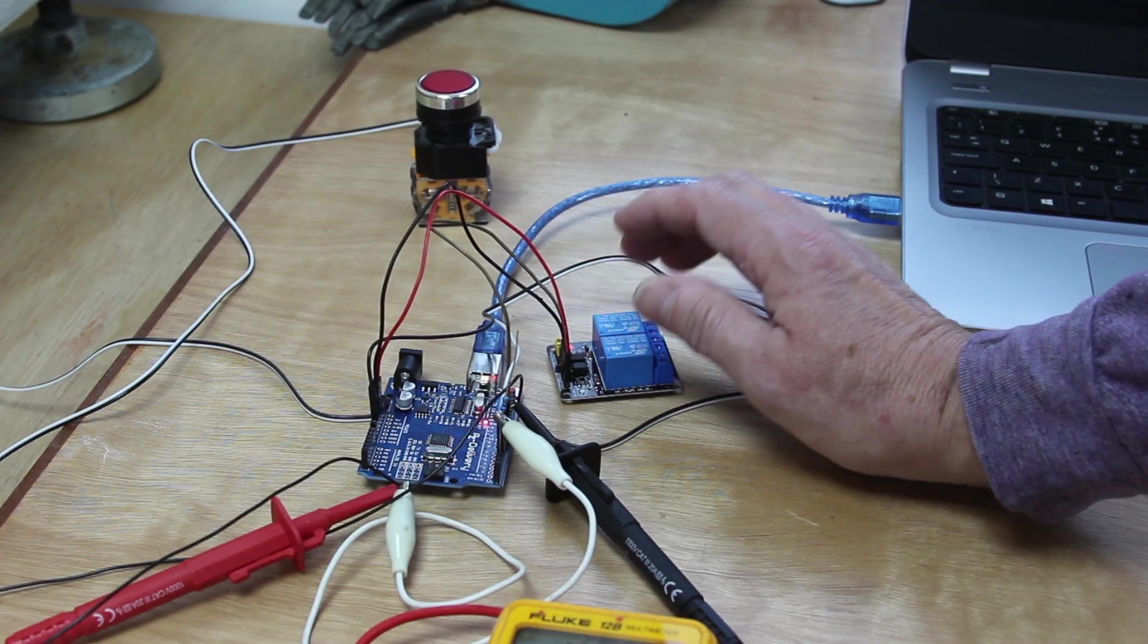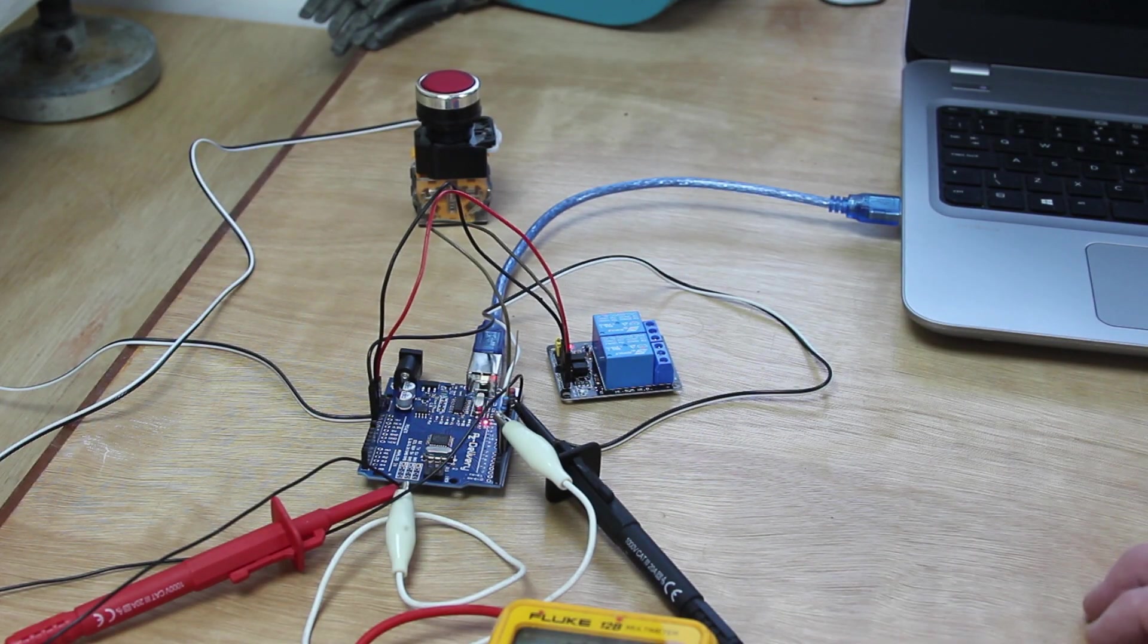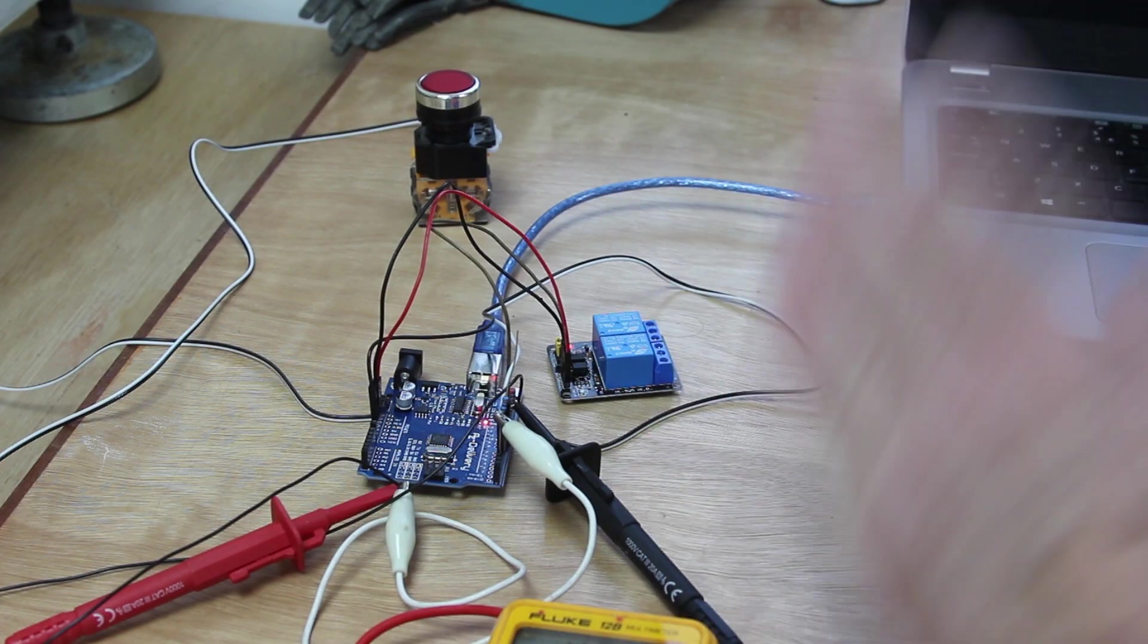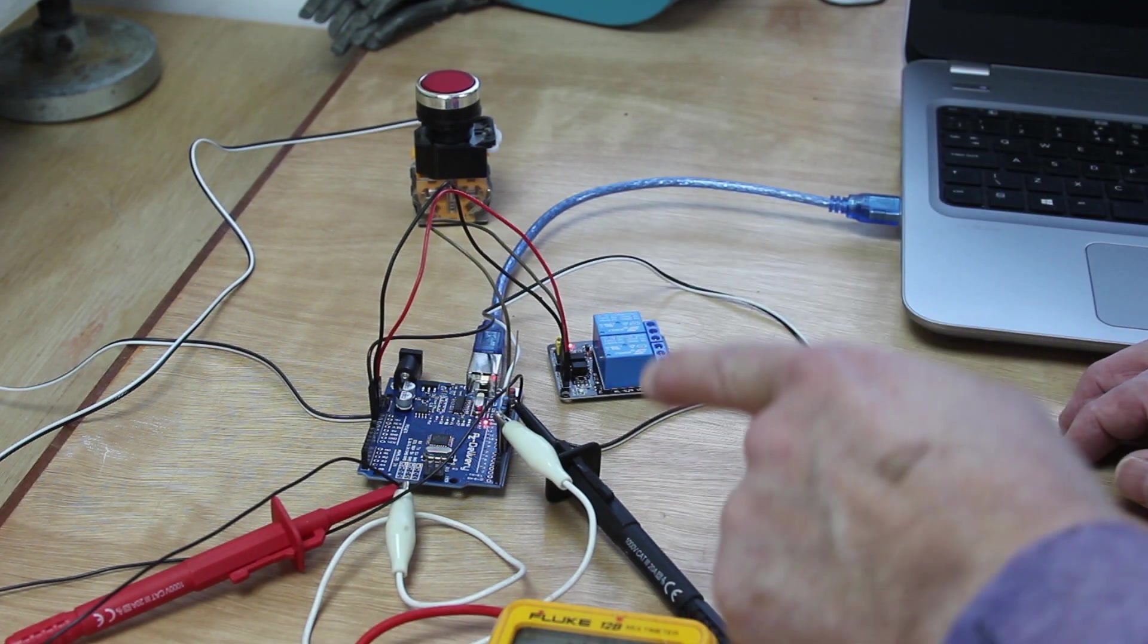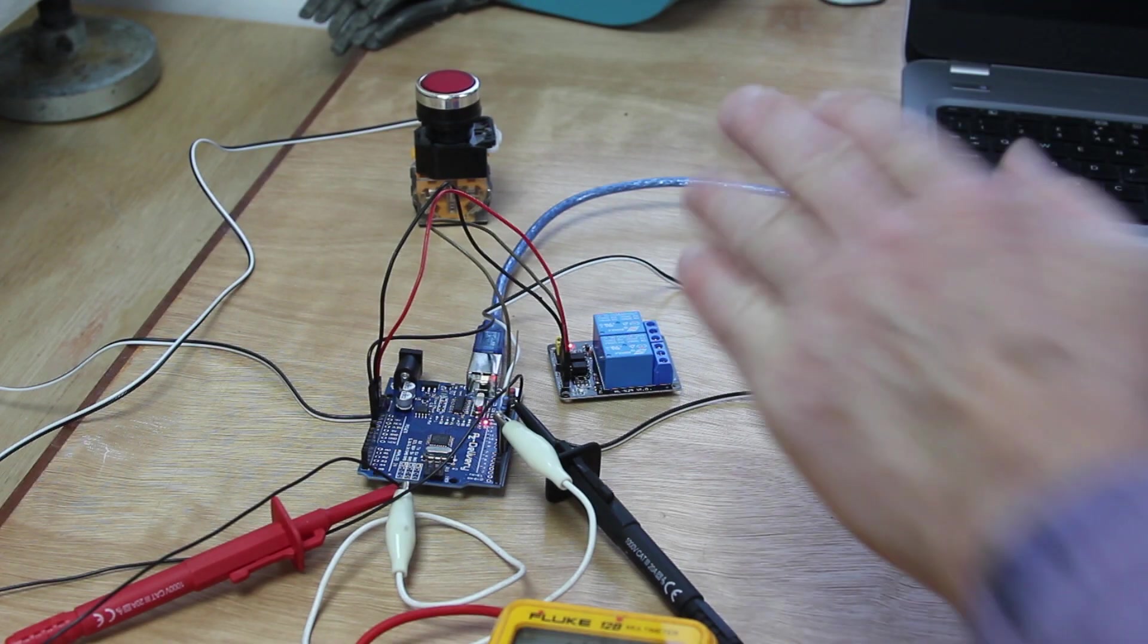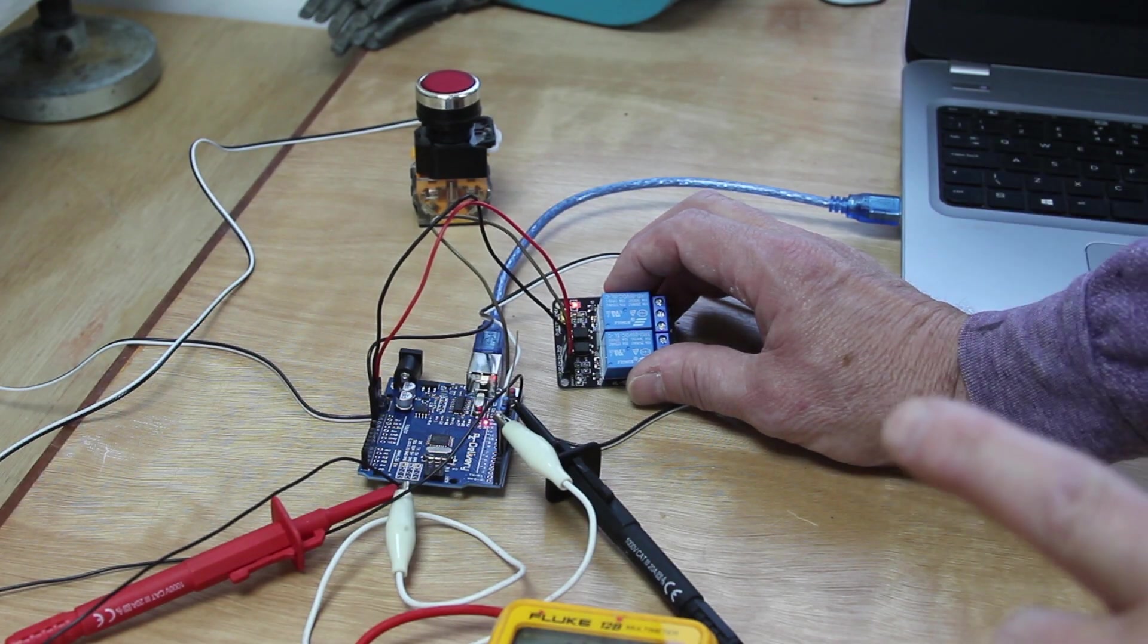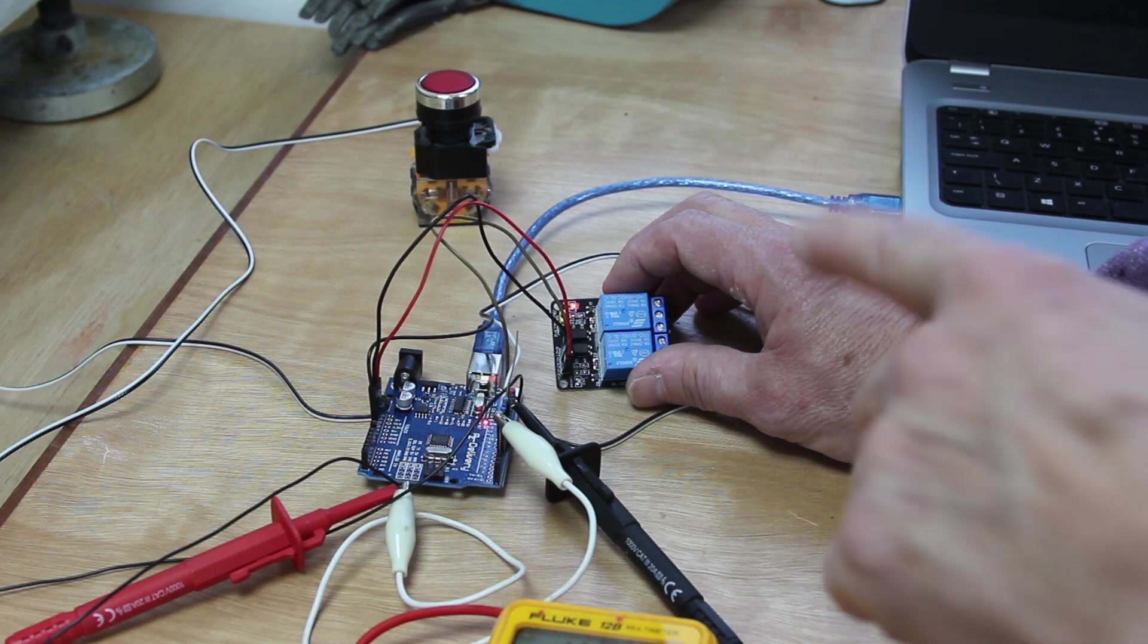The Arduino has picked up the fact that the bed has gone from five volts to zero volts, and it's doing this incredibly quickly, in the order of microseconds. Every few microseconds it's checking to see if the bed has gone to zero volts, and if it has, triggers the relay and remains on.